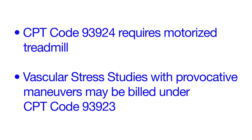Compliance with CPT code 93924 requires a motorized treadmill exercise. The test fundamentally involves taking the ABI at rest, exercising the patient on a treadmill for 5 minutes or until pain precludes continuing, then quickly laying the patient down again, taking the ABI again, and at periodic intervals until the ABI has returned to the beginning value.